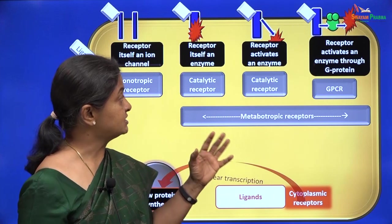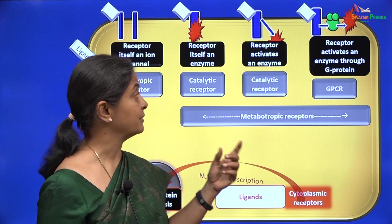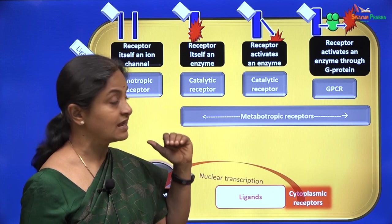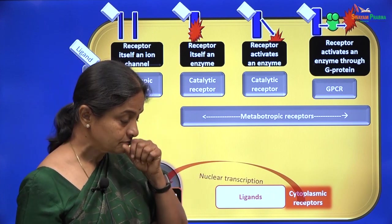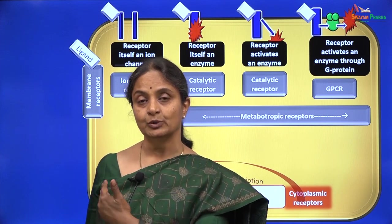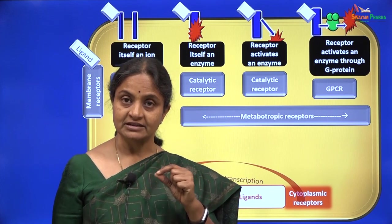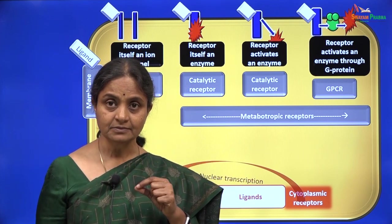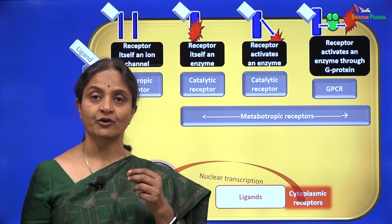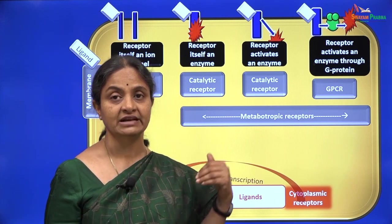If you remember the slide we saw in the very first session on cell signaling mechanisms, we had one condition where the receptor itself is an enzyme. The atrial natriuretic peptide binding to membrane guanylyl cyclase is a good example: the ANP receptor is indeed the enzyme itself, and binding of ANP to that receptor will activate the guanylyl cyclase activity within that receptor.